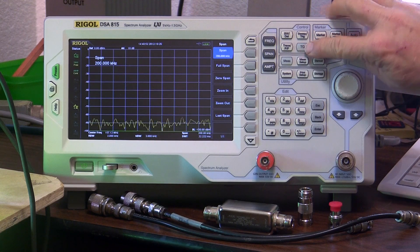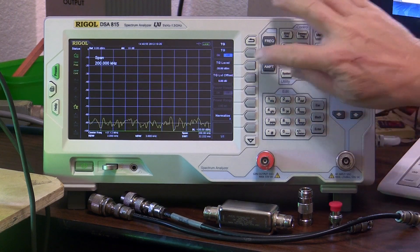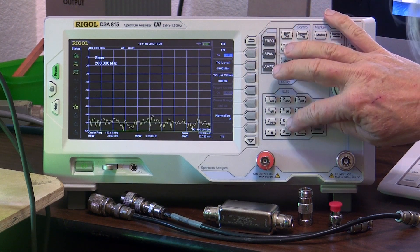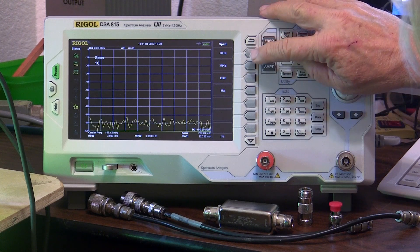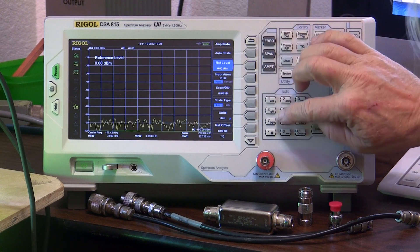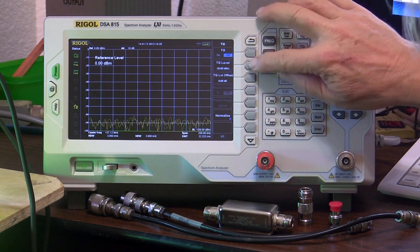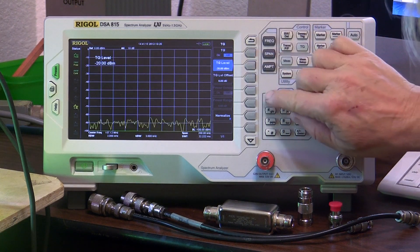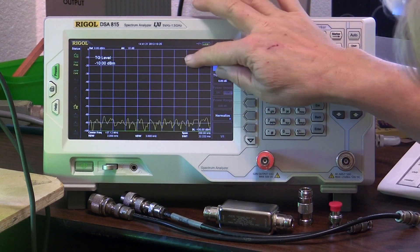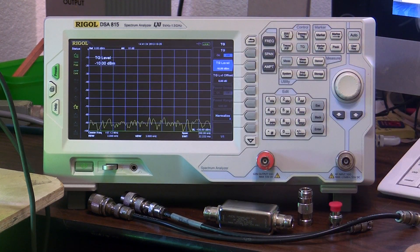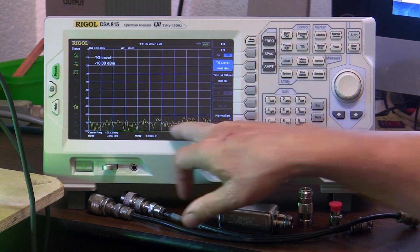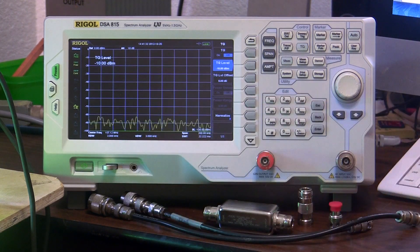Let's turn on the tracking generator, which is right here. The level's at minus 20, so let's set that at minus 10. Tracking generator level minus 10 dBm. That'll put the tracking generator right about here. But let's see first by turning it on to see how much we have leakage at this frequency.